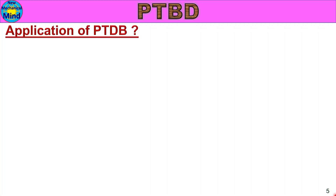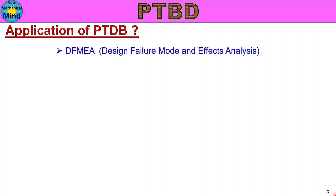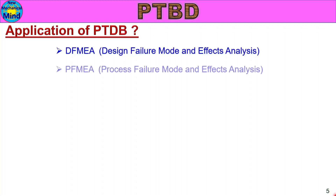The next step is the application of the Past Trouble Database. It is used in DFMEA — Design Failure Mode and Effects Analysis — and in PFMEA — Process Failure Mode and Effects Analysis. Details for both DFMEA and PFMEA are available in our channel; click the link.